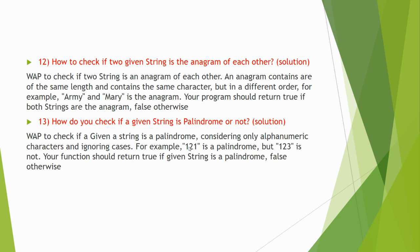The next question is: how to check if a given string is a palindrome. This is very basic — for example '121': if you reverse it, you get the same '121', so it is a palindrome. But for '123', if you reverse it you get '321', which is not the same as the input, so it is not a palindrome.